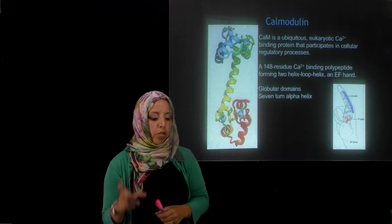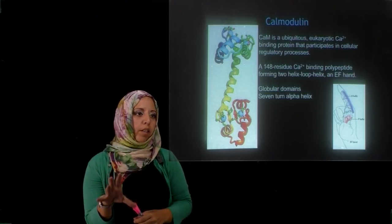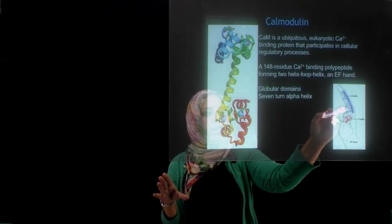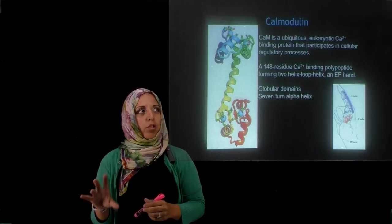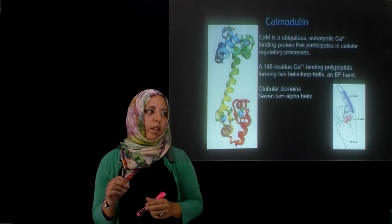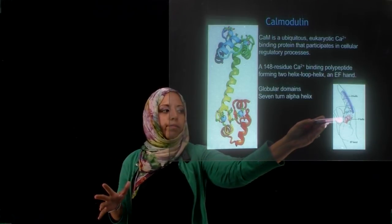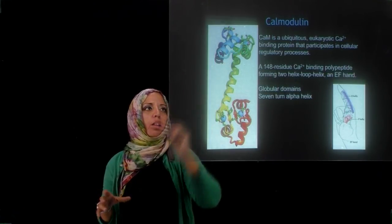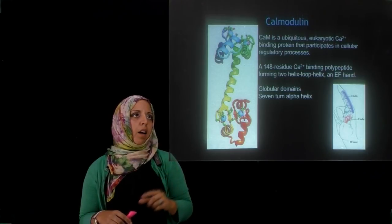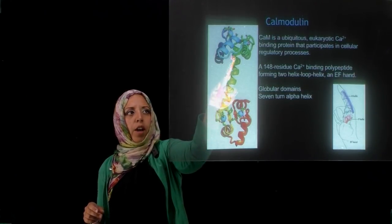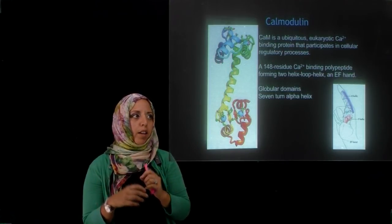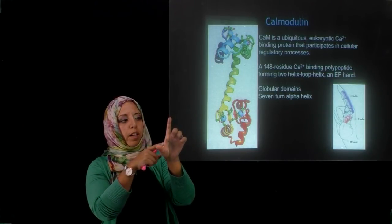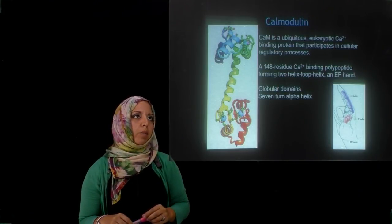Here is a structure of calmodulin. It binds calcium at a site referred to as the EF motif, where you have a shorter helix and a longer helix with calcium bound right in between. A calmodulin molecule binds four different calcium ions, coordinated between pairs of helices, and there is a longer helix that acts as a flexible linker. The EF binding motif is common for calcium-binding proteins.